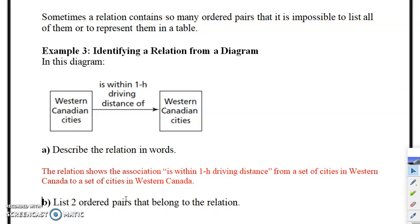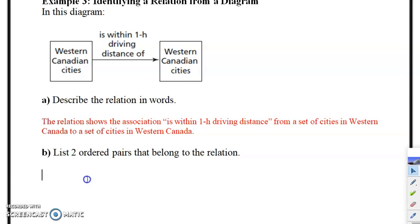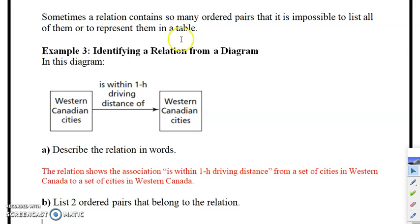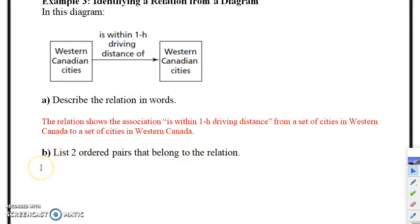List ordered pairs. Now obviously there's no data here and that's what it means from up at the top when it says sometimes there's so many, because there's a vast amount of cities in Western Canada.